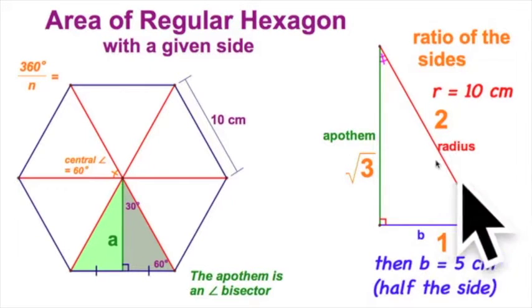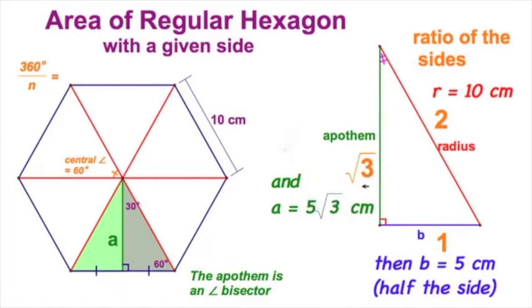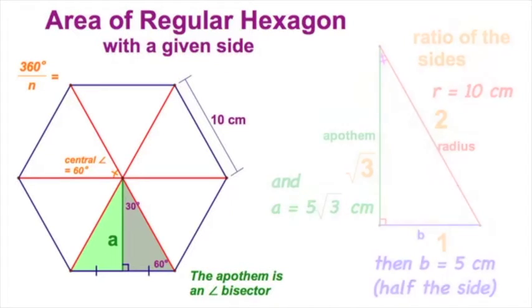Radius will be 10 as well. We don't really need that now, but in case we need it later on. And most importantly, the apothem is going to be 5 radical 3. Hey, we're just about done. I've got to get rid of that.